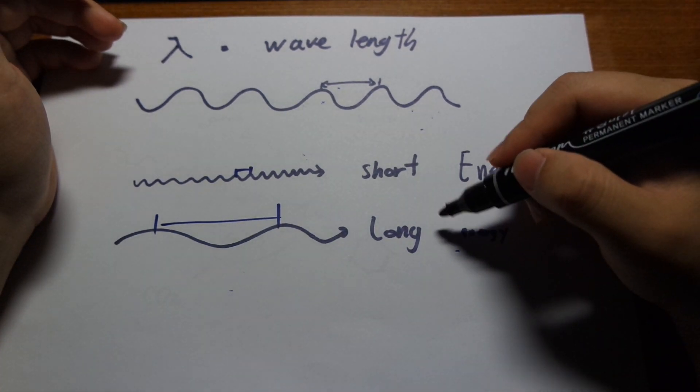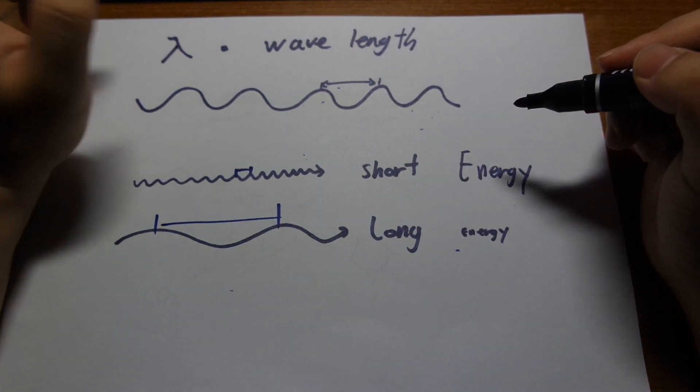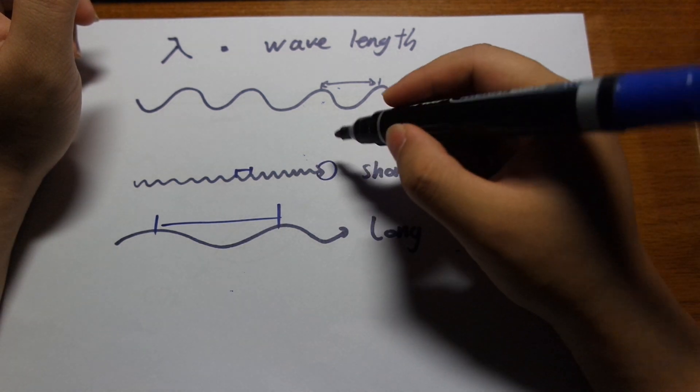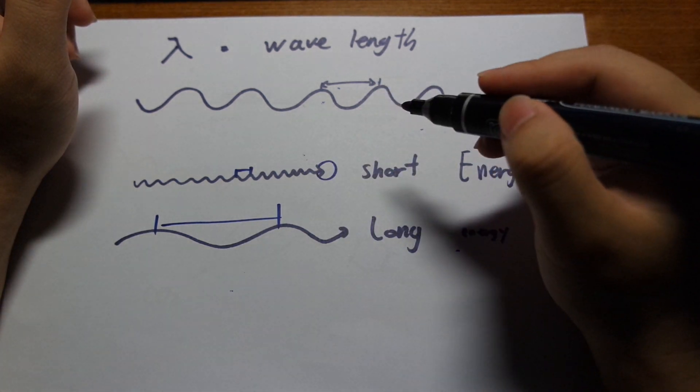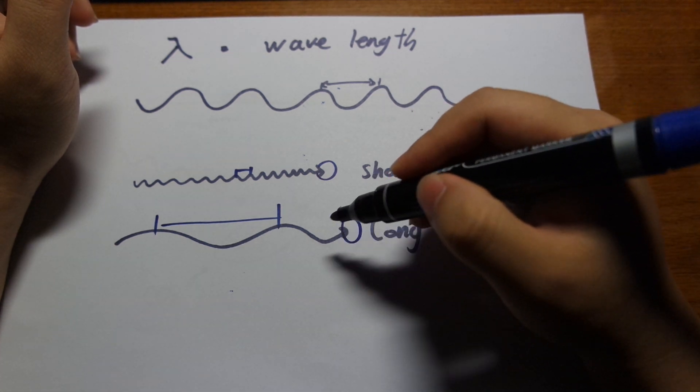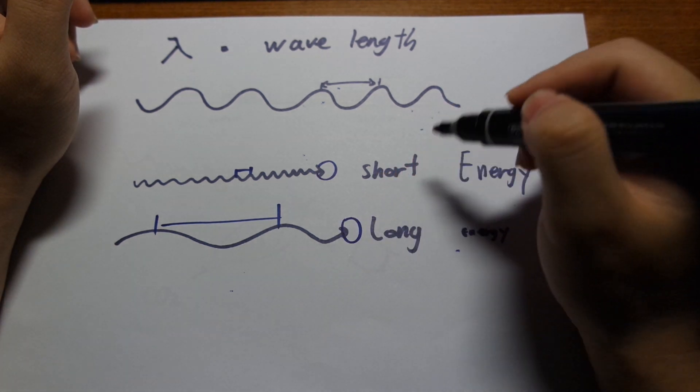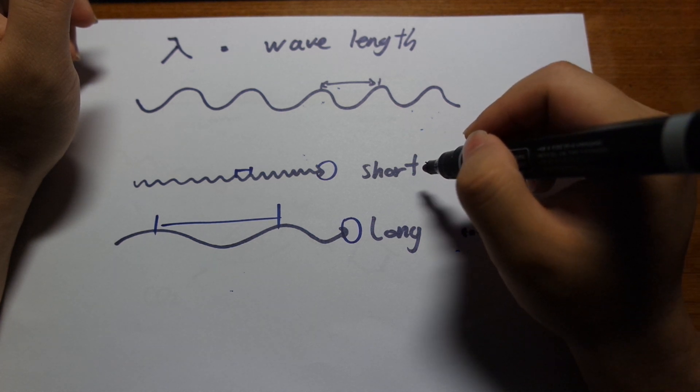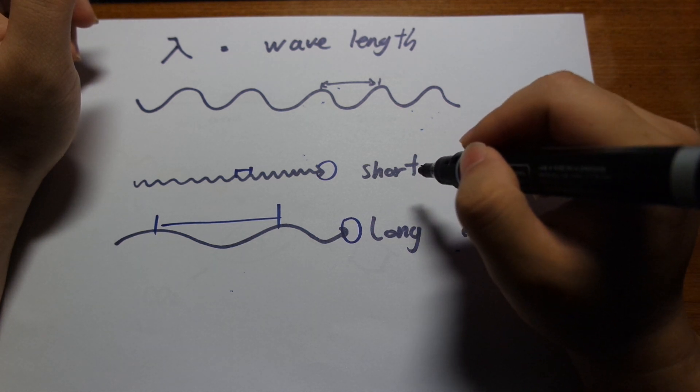And the difference between a short and long wavelength is the amount of energy that that light carries. So if a photon has a short wavelength, it has lots of energy. If a photon has a long wavelength, it doesn't have as much. So short wavelength light is something like ultraviolet, UV light, X-rays, gamma rays.